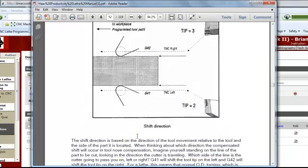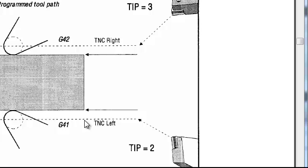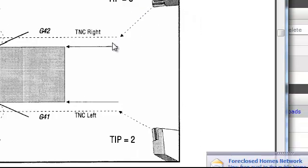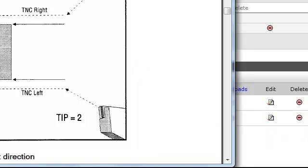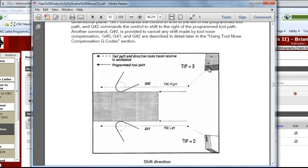If we scroll up here, G41 is to the left, so typically used for ID turning — internally, inside something. G42 is OD turning, which we're really going to use mostly. In order to use Tool Nose Radius Compensation correctly, you've got to turn it on just like you did with cutter compensation on the mill — you have to make a move. As you're making that move, you're turning compensation on. There'll be a portion of your code dedicated to turning on G41 or G42, mostly G42, because we're compensated to the right. Here is your program part path — you're to the right of it for G42, to the left for G41.